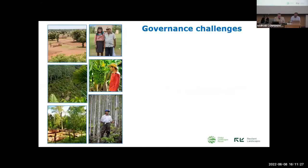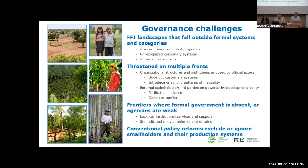So what are the governance challenges faced by the forest-farm interface? First, the producers present in the forest-farm interface often fall outside of formal systems and categories. Often, these families have insecure, undocumented properties. Because they lack formal property rights, they are usually excluded from official programs. These producers maintain local governance systems framing behaviors that are usually unrecognized because they are customary systems. These include systems of authority, reciprocity, resource allocation, and conflict mediation.